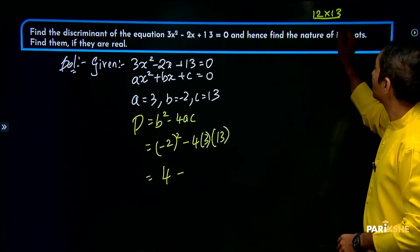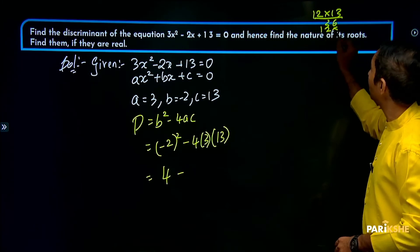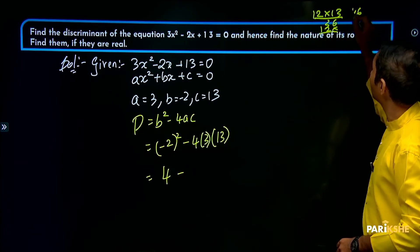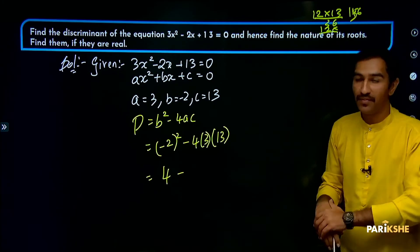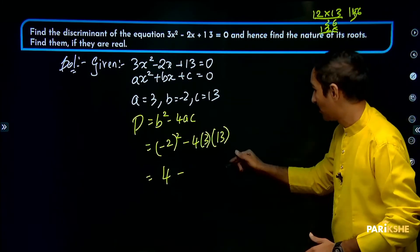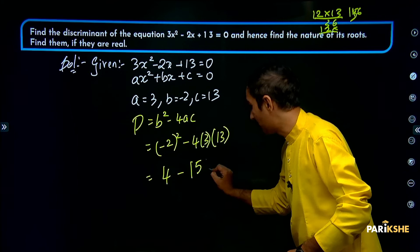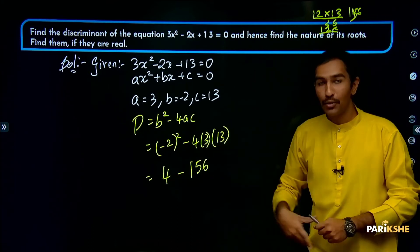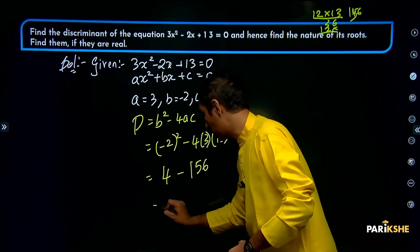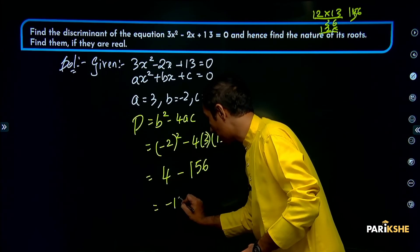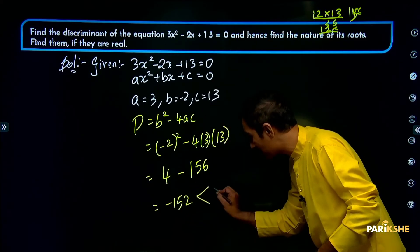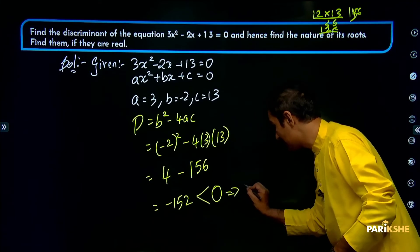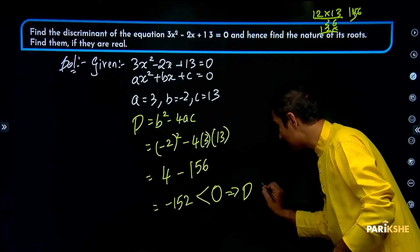Substituting: D equals minus 2 the whole square minus 4 times 3 times 13. That gives us 4 minus 12 times 13. 12 into 13 equals 156. So D equals 4 minus 156, which equals minus 152.